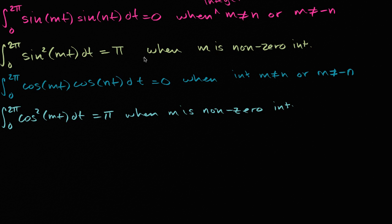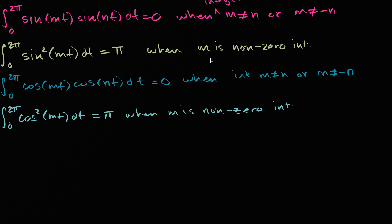Just to be clear — I wasn't as clear as I should have been in the last video — this is going to be true where m is a non-zero integer. If m was zero, then the inside of this integral would just simplify to zero and then the integral would be zero. So m has to be a non-zero integer for this to be true.